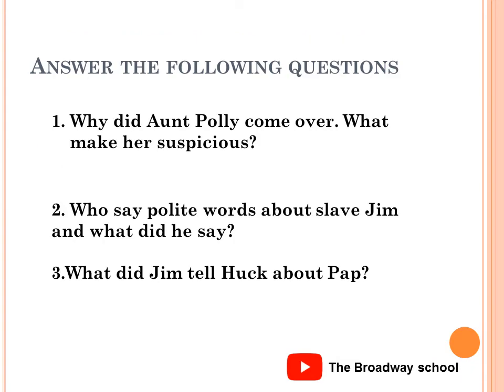Question and answers — note down the questions in your notebooks and write the answers. Question number one: Why did Aunt Polly come over? What made her suspicious? Aunt Polly came over because she got letters that Tom and Jim were there, and Aunt Sally didn't reply to any of the letters.